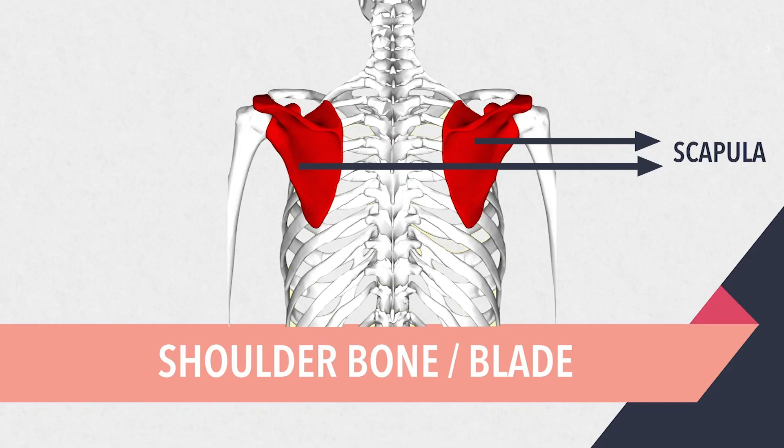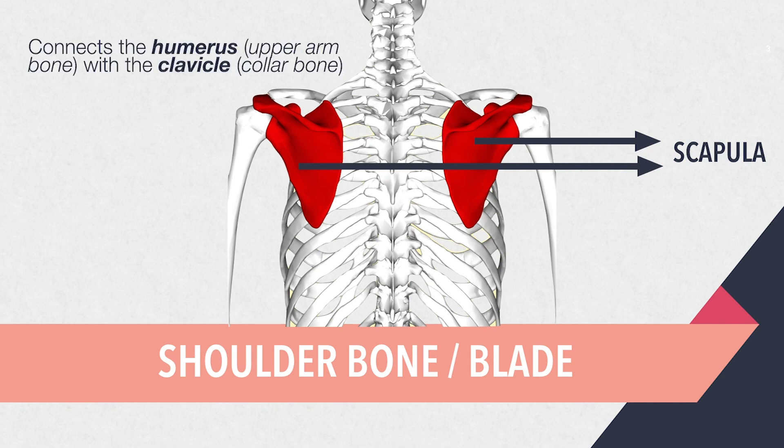The scapular is also known as the shoulder bone or the shoulder blade. It connects the humerus, which is the upper arm bone, with the clavicle, which happens to be the collarbone. Now that we've put a face to this mysterious scapular, we can continue with the functions of the traps.